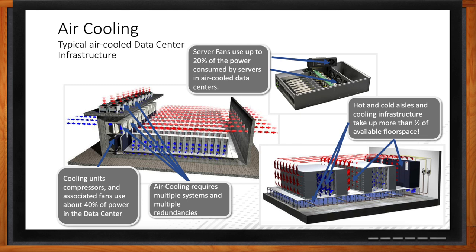On top of that, you've got the additional cost of those HVAC units, and you have to have redundancies — if a cooling unit goes down, you can't have the temperature in your data center go up. Also, on the right-hand side you can see that a typical data center will have a hot aisle and a cold aisle built into it, and that additional space required is actually taking up about half of your available compute space, so your overall density is a lot lower than it really could be.